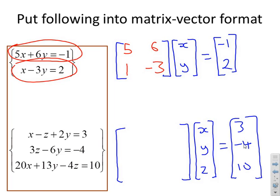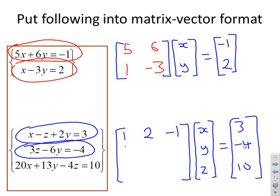Which equation gives me the 3? It's x minus z plus 2y, so that's 1x plus 2y minus 1z. Next equation: 3z minus 6y, so I've got no x, minus 6y and 3z.